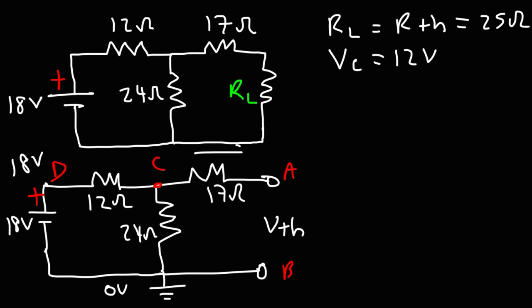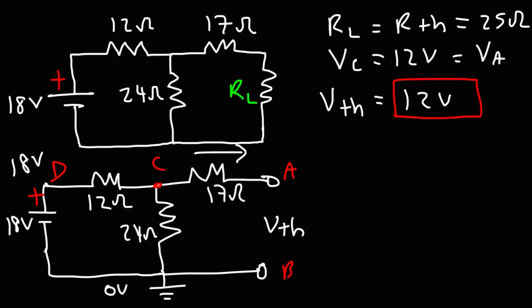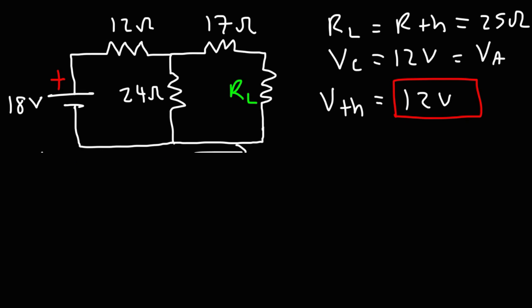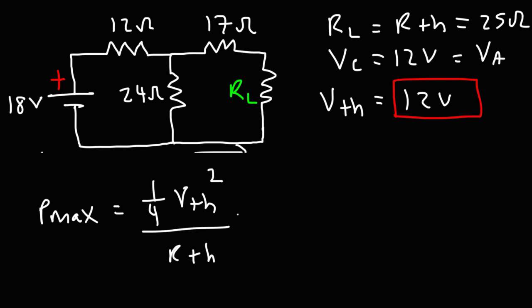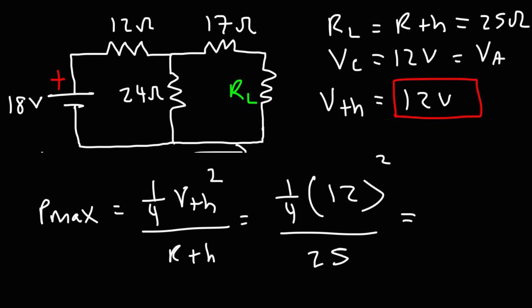There's no current flowing through the 17 ohm resistor, so the voltage drop across it is zero, meaning VC and VA are the same. Thus, the Thevenin voltage is the potential difference between A and B. B is at zero, so the Thevenin voltage is 12 volts. Now we can calculate the maximum power delivered: it's one fourth times the Thevenin voltage squared divided by the Thevenin resistance. So it's one fourth times 12 squared divided by 25. 12 squared is 144, divided by 4 is 36, and 36 divided by 25 gives 1.44. So the maximum power delivered is 1.44 watts.